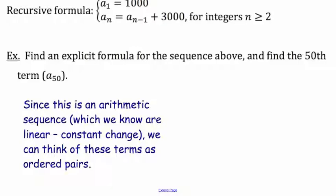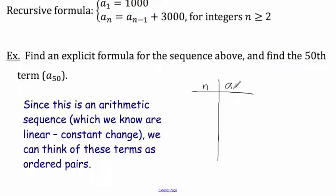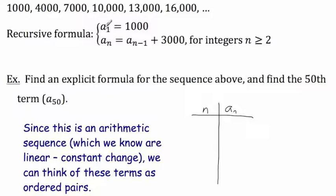Let's represent each term as an ordered pair. Instead of an x-y table, sequences use the term number as input, denoted with the variable n. Since this sequence is called a, the outputs are a sub n, based on whatever term we are on. When n equals 1, the output a sub n is 1,000 — the first term is 1,000. The second term is 4,000. The third term is 7,000. The fourth term is 10,000.